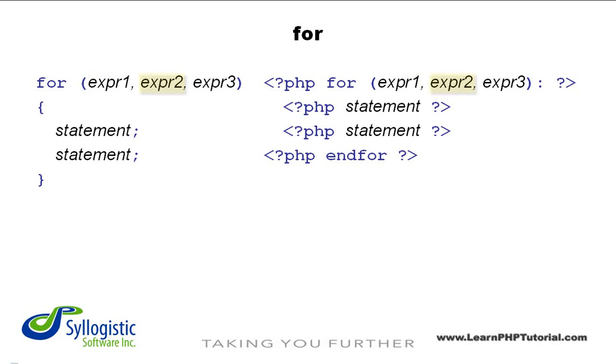The next part is a condition that's checked before each loop iteration. Just like in a while loop, this means that the body of the loop won't be executed if the condition evaluates to false the first time. Finally, the third expression is executed after the body of the loop and before the second expression is checked. This is most often used to change the value of the loop counter for the next iteration of the loop.